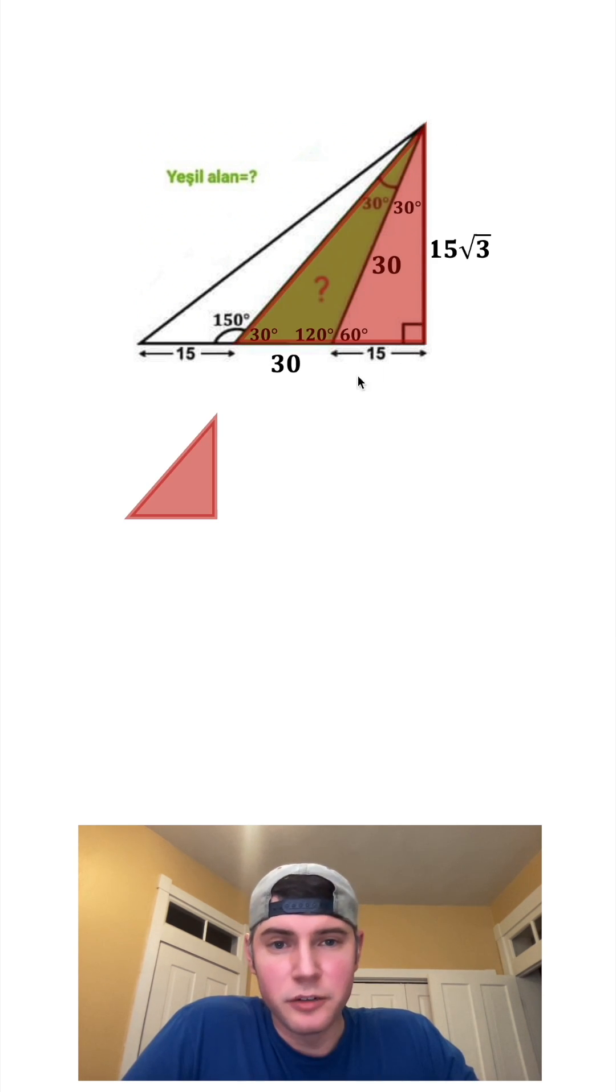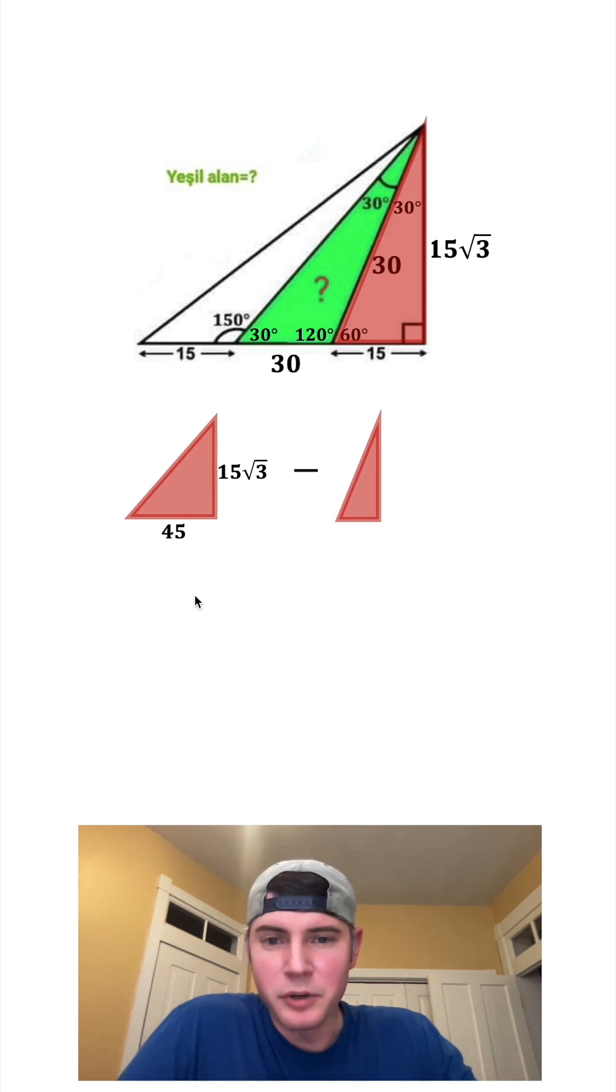So for this larger red triangle, if we bring it down here, the height is going to be 15 root 3, and the base is going to be 30 plus 15, which is 45. And then we're going to subtract the smaller triangle, which also has a height of 15 root 3 and a base of 15.